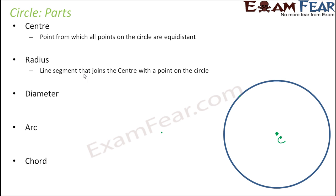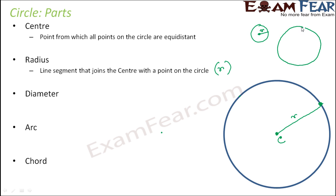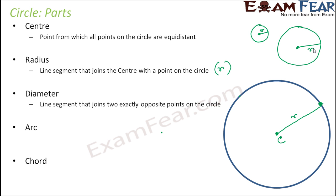Next is radius. It is the line segment that joins the center with any point on the circle. We normally denote it with a small r. Every circle has a constant value of radius — a small circle has a small radius and a big circle has a larger radius. Bigger the radius, bigger the circle.